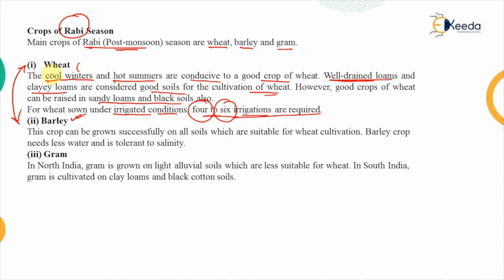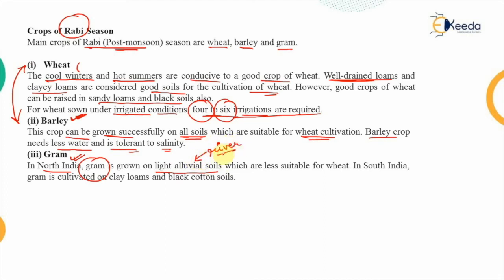Barley is very similar to wheat — commonly called the poor man's wheat — and can be grown successfully on all soil types suitable for wheat cultivation. Barley needs less water and is very tolerant to salinity. Gram is sown during the Rabi season; in northern India it is grown on light alluvial soil accumulated by river flow, which is less suitable for wheat. In southern India, gram is cultivated on clay loams and black cotton soils.